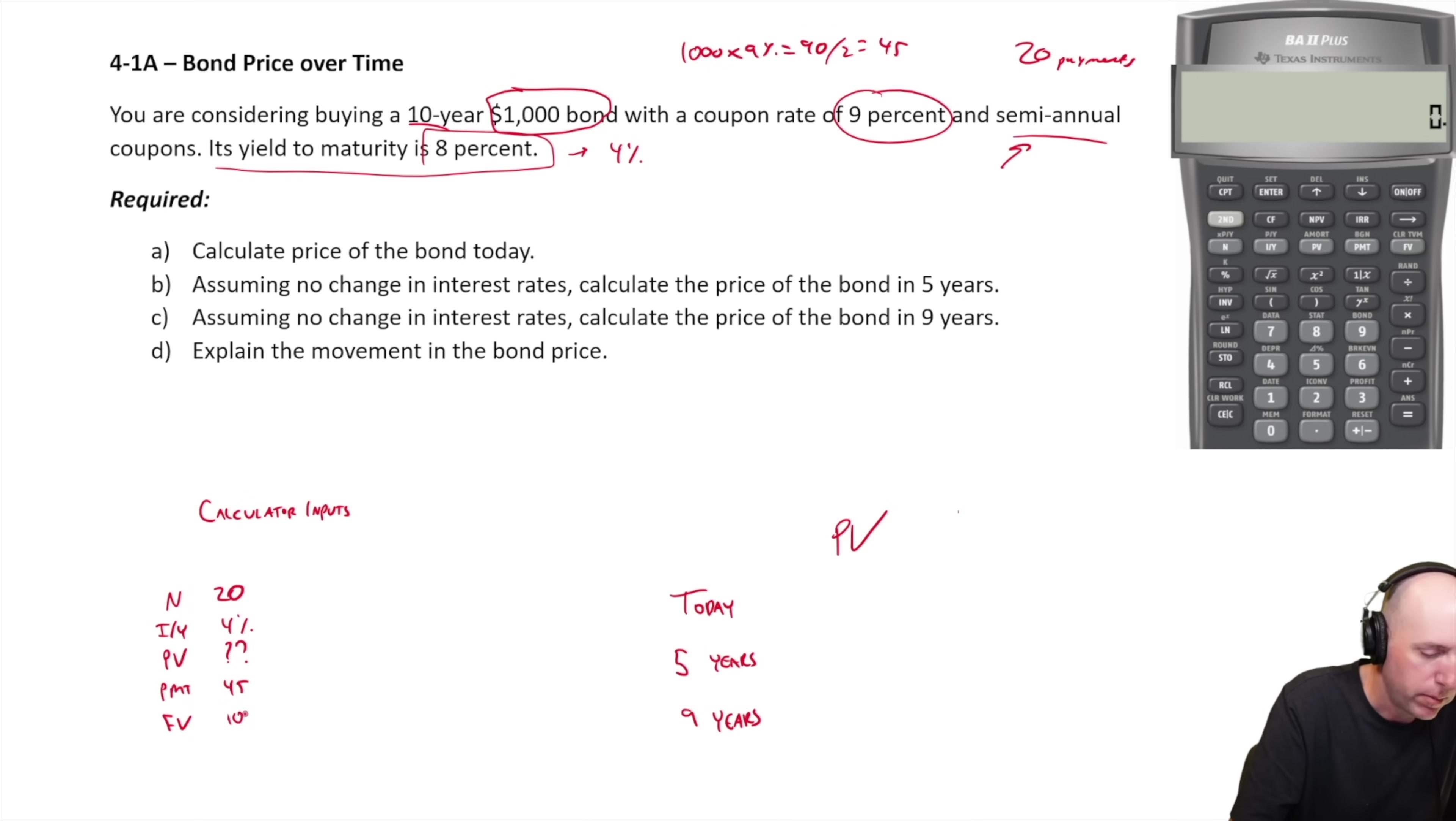Our FV is a thousand bucks. That's what we get paid back at the end of this. So we're saying what's the present value of those cash flows? 20 payments of $45, that's what this is summarizing. And $1,000 lump sum coming to us at the end of the bond.